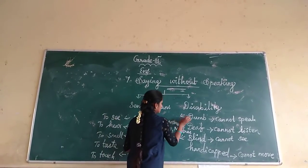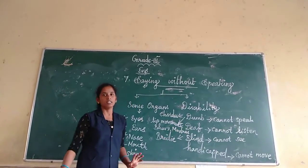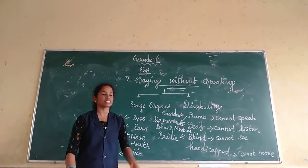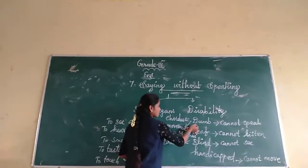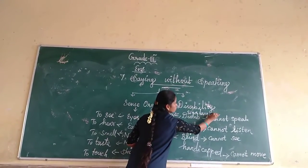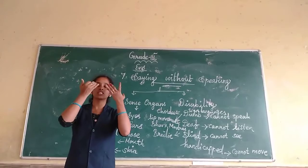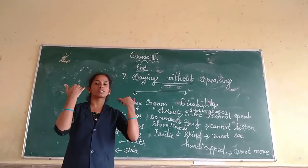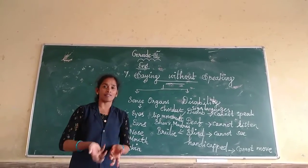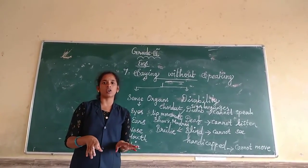Dumb people have a special device to help them speak. They have schools where sign language has been developed for them. Without using the mouth, without using eyes to see, without using ears — how do they express their language and communication? While reading this lesson, you can understand the concept.